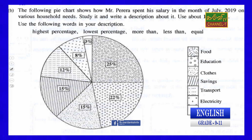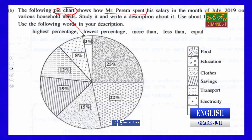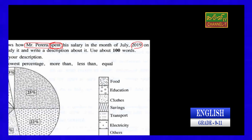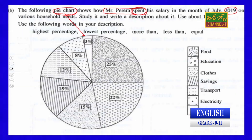Here you can see the following pie chart. The pie chart shows how Mr. Pereira spent his salary. Note: it is very necessary to use the past tense — 'spent' — because everything has been completed. He has already finished spending. Mr. Pereira spent his salary in the month of July 2019 — that is two years back — on various household needs.